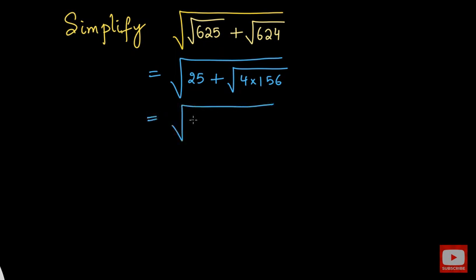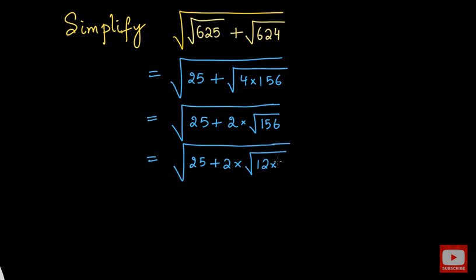We can take it outside. We have 25 plus square root of 4, which is nothing but 2, and let's keep root 156 inside the square root itself. Now once again, we have square root of 25 plus 2 times... This 156 can be written as 12 times 13. You can check this multiplication, 12 times 13 is 156.